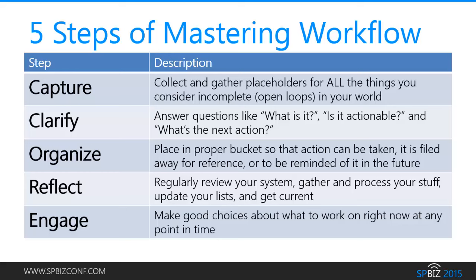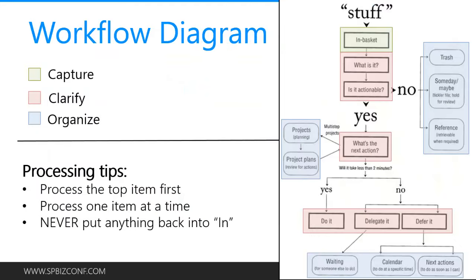There are five basic steps to the GTD system. Capture is just collecting and gathering placeholders for all the things you consider incomplete — all the open loops in your world — getting them all into one big bucket. The next step is to clarify: you look at each item and answer questions like, what is this, is it actionable, and what's the next action? Then you organize by placing each item in the proper bucket to be acted on, filed for reference, or set for a future reminder. In the reflect step, you regularly review your system, gather and process all your stuff, and update your lists. Finally, engage — you actually do the work and make good choices about what to work on at any point in time.